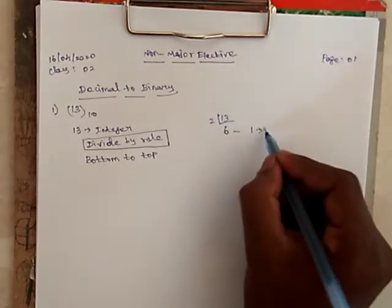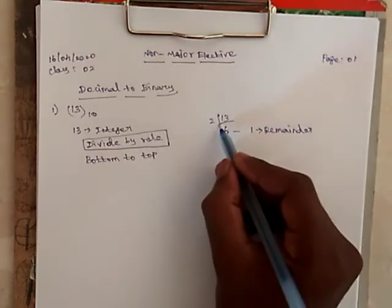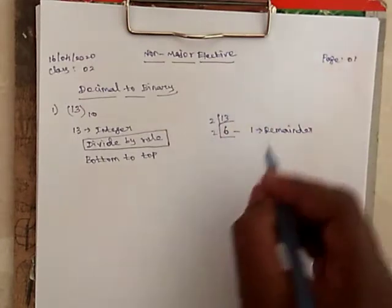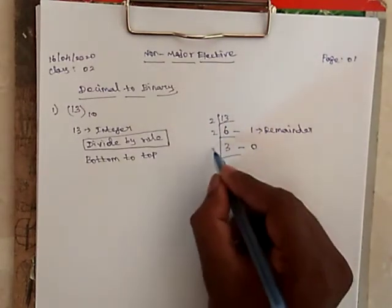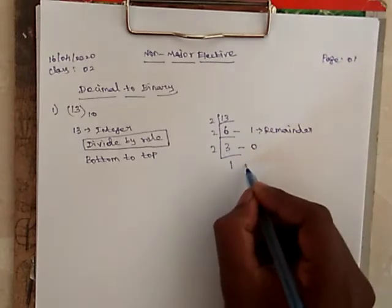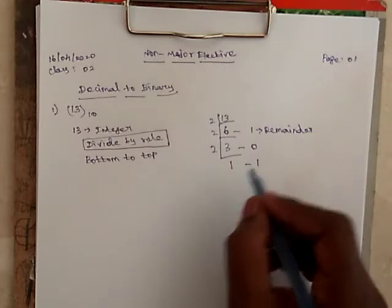This one is called remainder. Next, we have to divide this 6 by 2. So, 3, remainder 0. Then, 2, 1, remaining 1. So, this conversion is over.